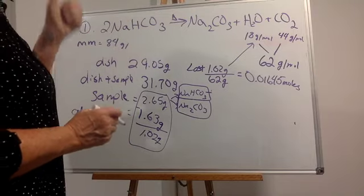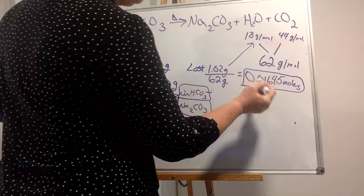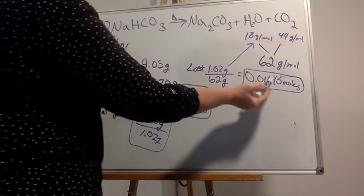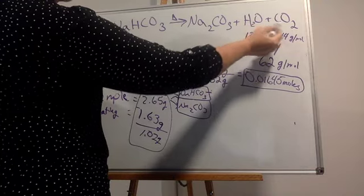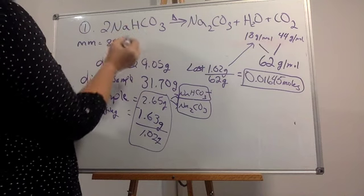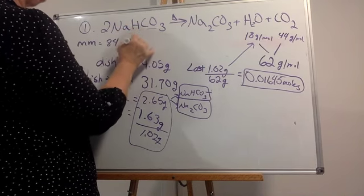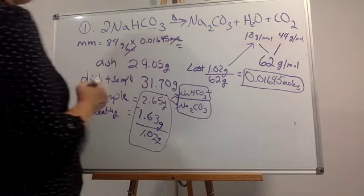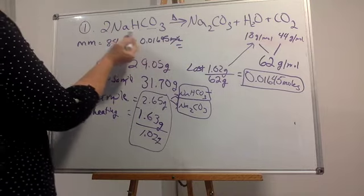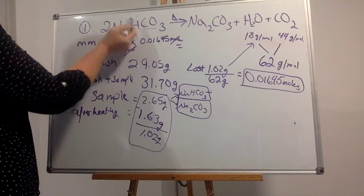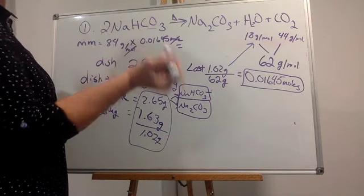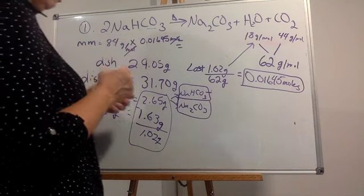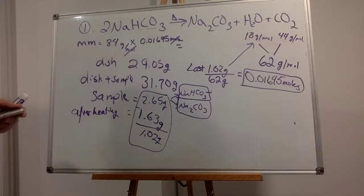Normally we would multiply by 2 to find out how many baking sodas we have, but this is pure experimental data. It already takes into consideration that two of these broke down to form one of these, because this is weighed — it's not theoretical at all, it's experimental. So by atom economy, if I have this many moles lost, I have to have that many moles of atoms here. The experiment has already taken that into consideration, so we're not doing a theoretical yield.